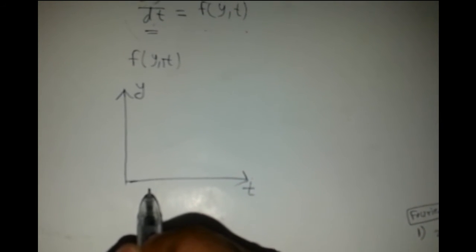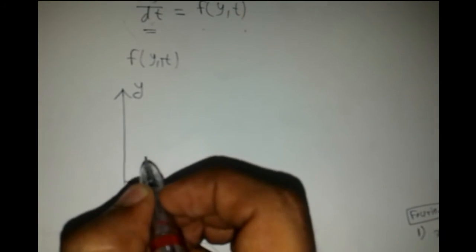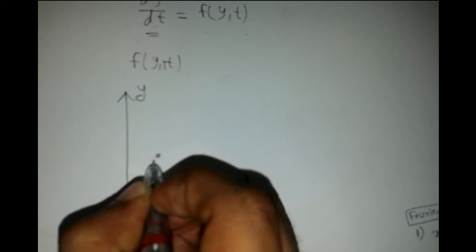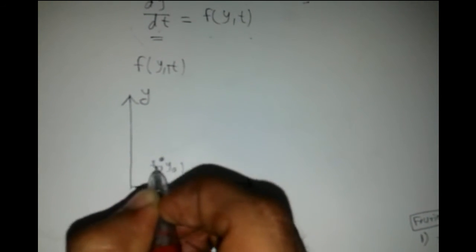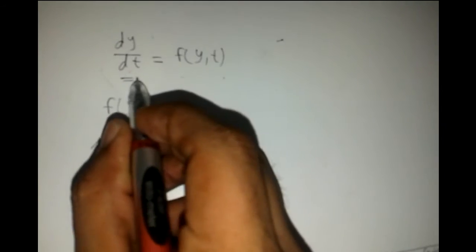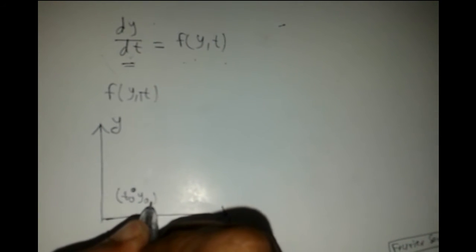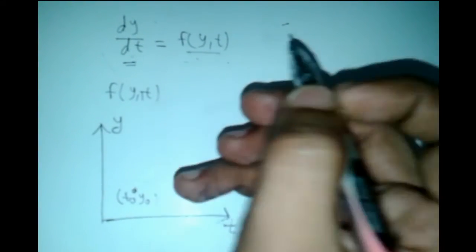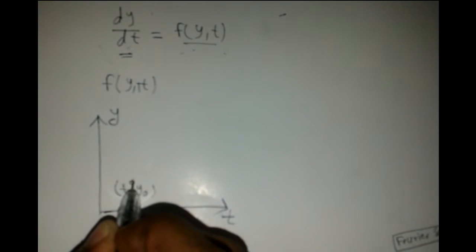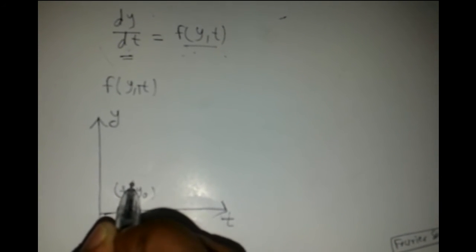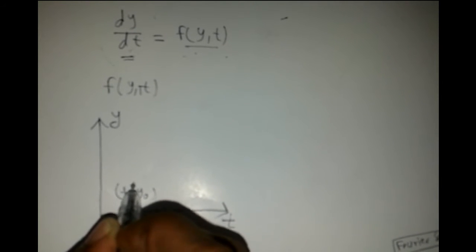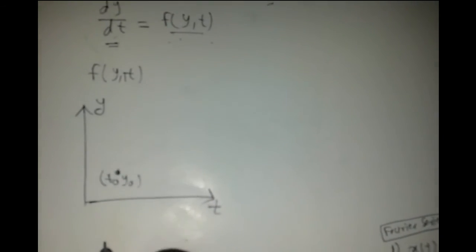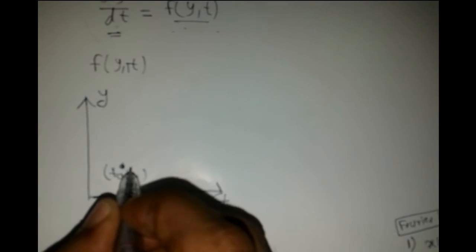For each differential equation, to find a particular solution we need an initial condition. Suppose we have the initial condition t₀, y₀. What this differential equation tells us is that on the t-y plane, the slope at point t₀, y₀ can be calculated by the function f(y, t). If I know this initial point, I also know the slope of my solution curve at that point.